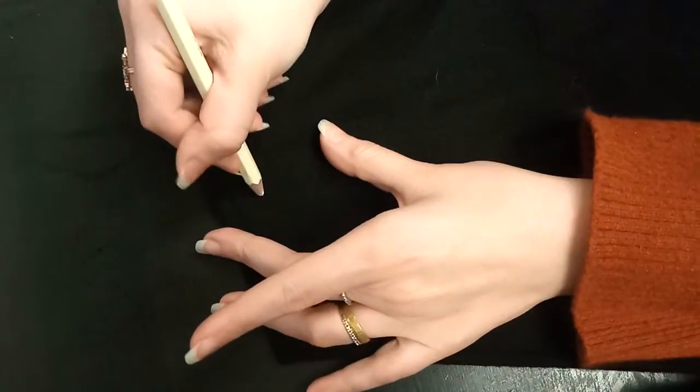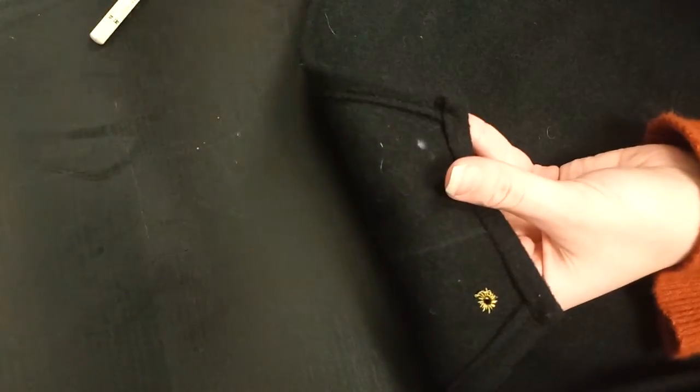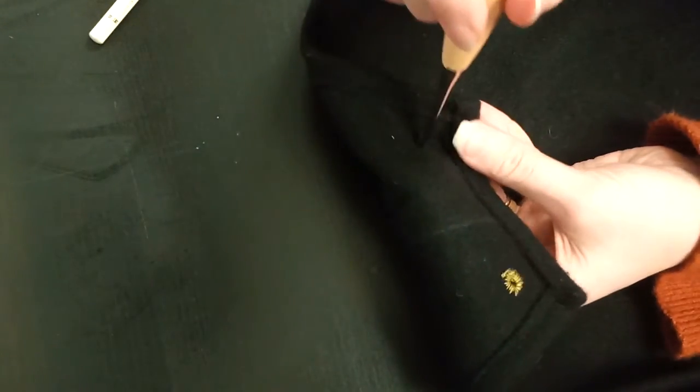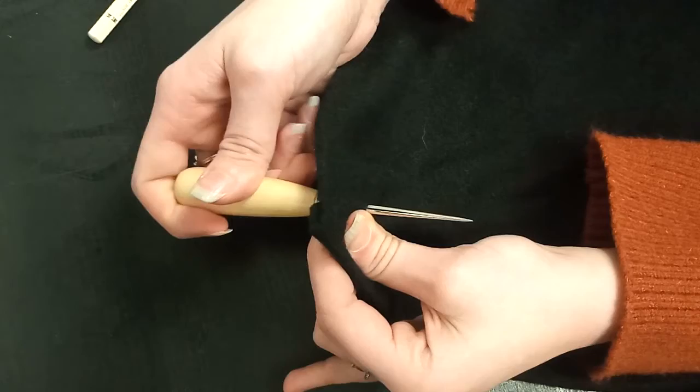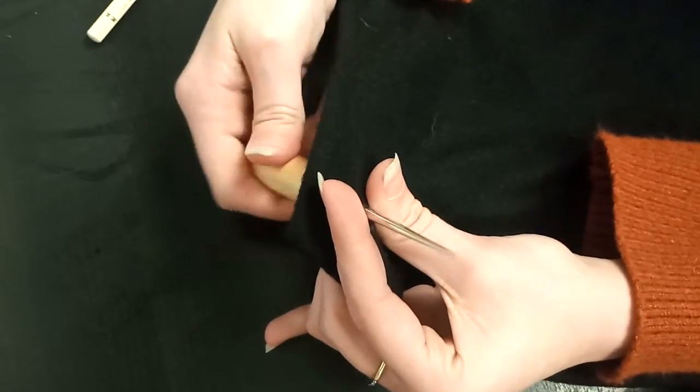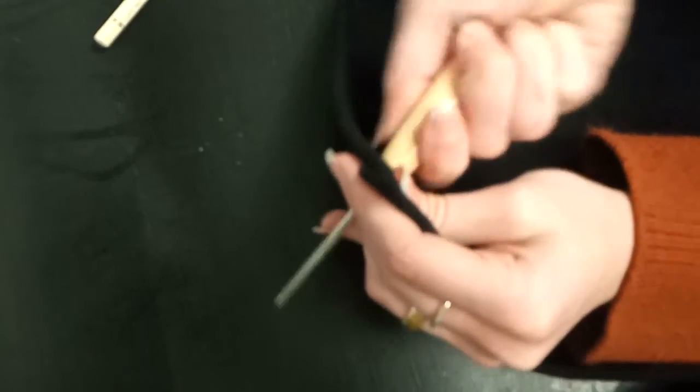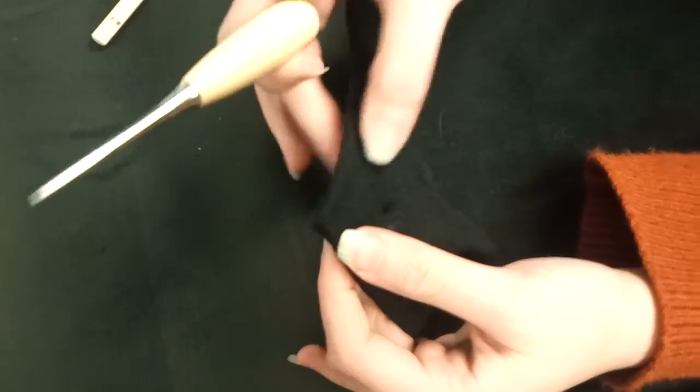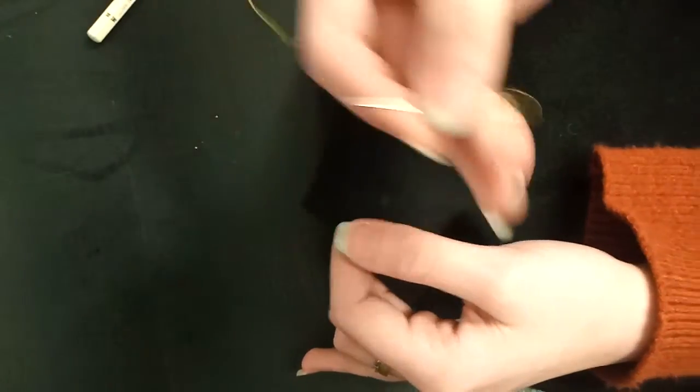So we're going to draw out a little reference point, and we're going to grab our awl and just push that through the material. Because this is wool I'm being a little bit rough with it, but if you're working with something like linen be very, very gentle. We don't want to fray the edges. So we've got our hole now.